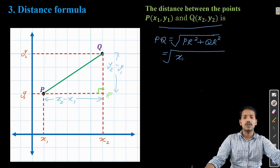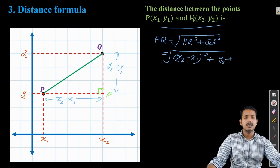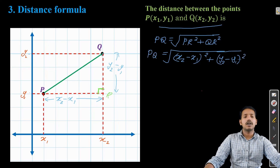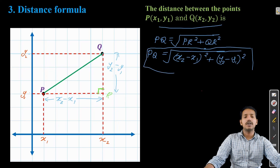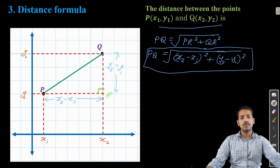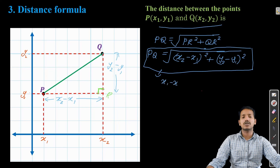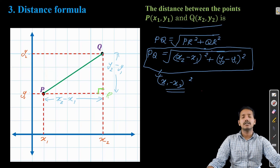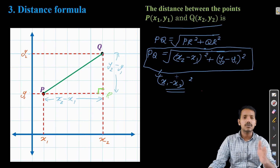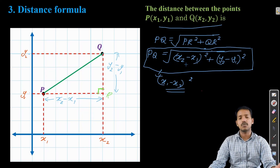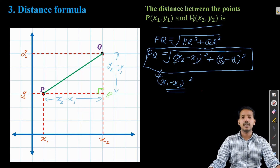So the Distance Formula is: PQ = √[(x₂ − x₁)² + (y₂ − y₁)²]. This is the formula to find the distance between two points if their coordinates are given. Note: even if we write (x₁ − x₂), it is also correct, because when we take the square, the negative sign becomes positive. So the order of the coordinates in the Distance Formula is not critical. This is a very important formula to remember.